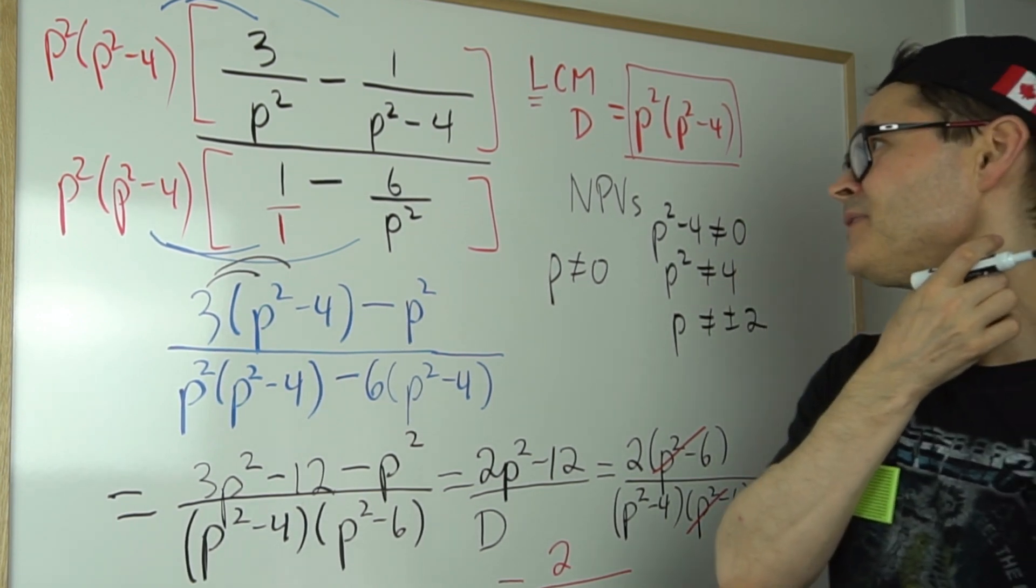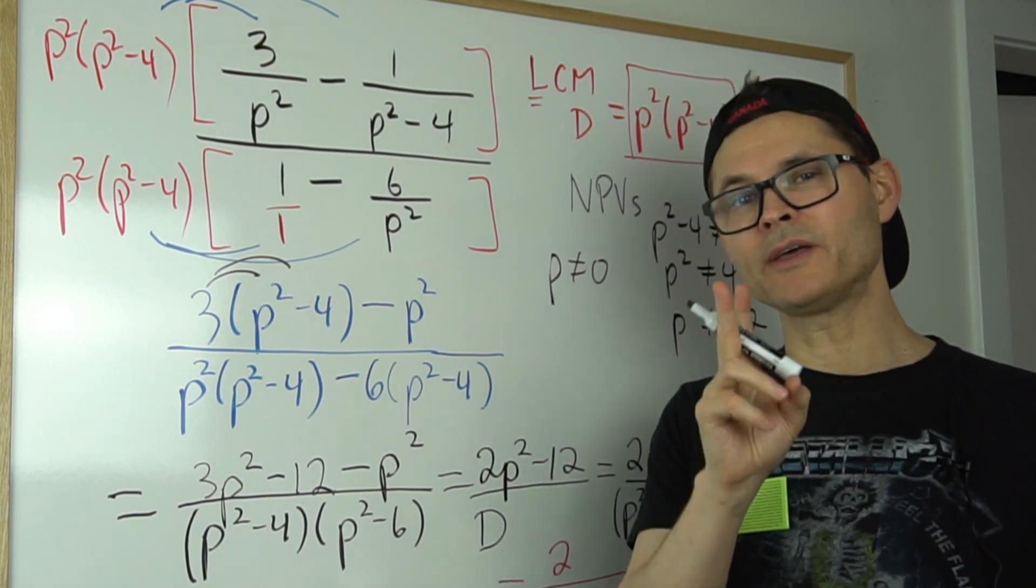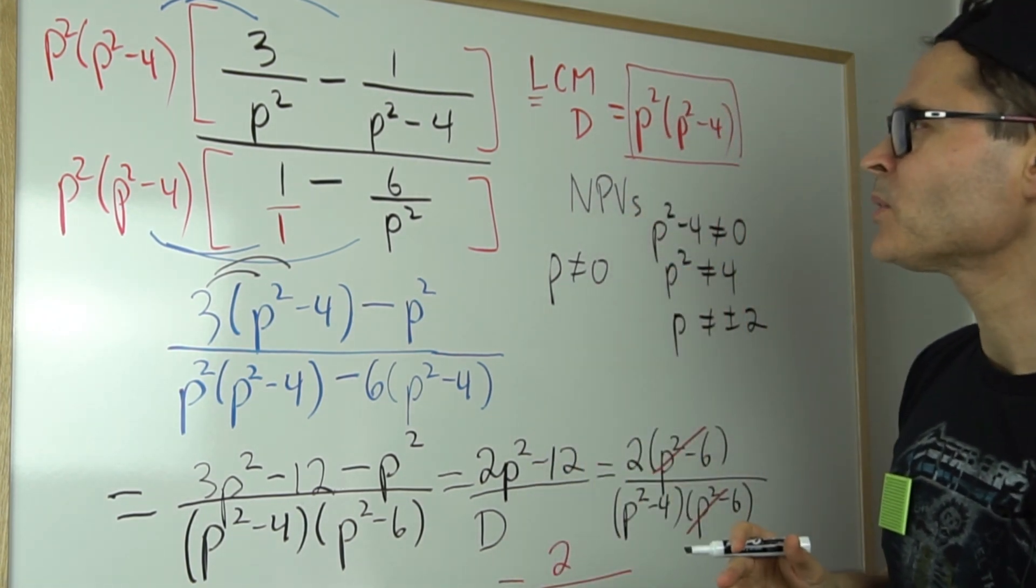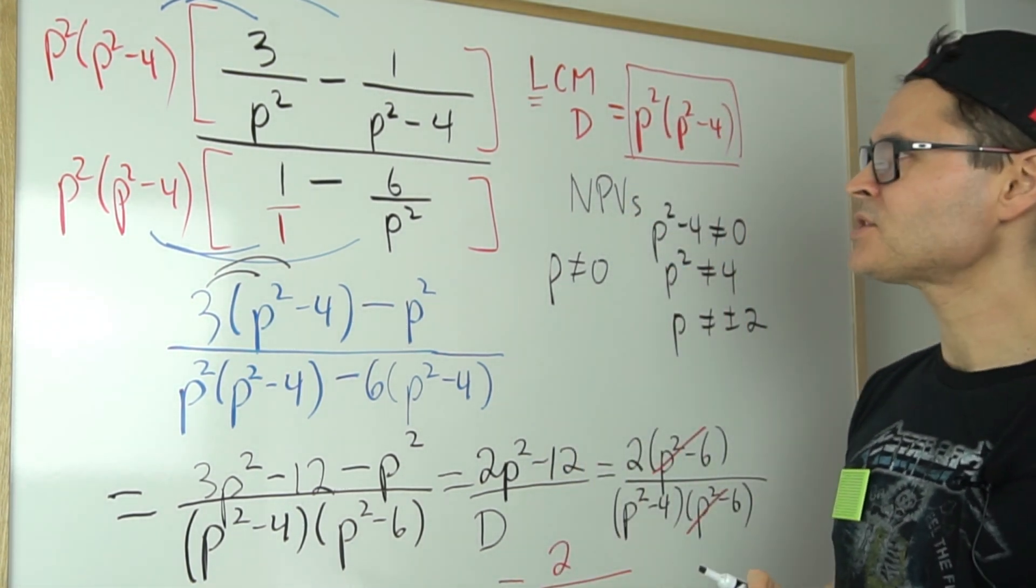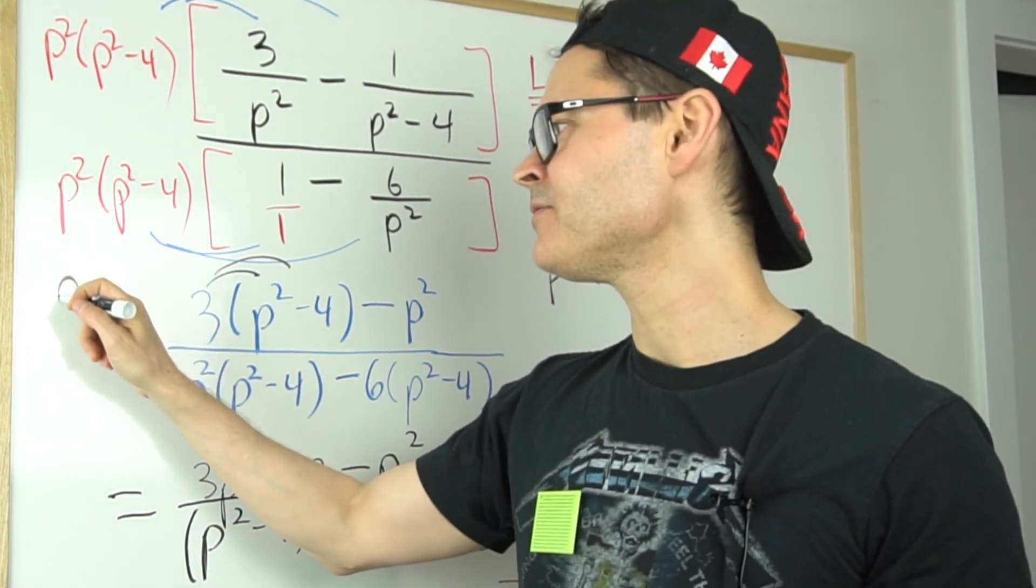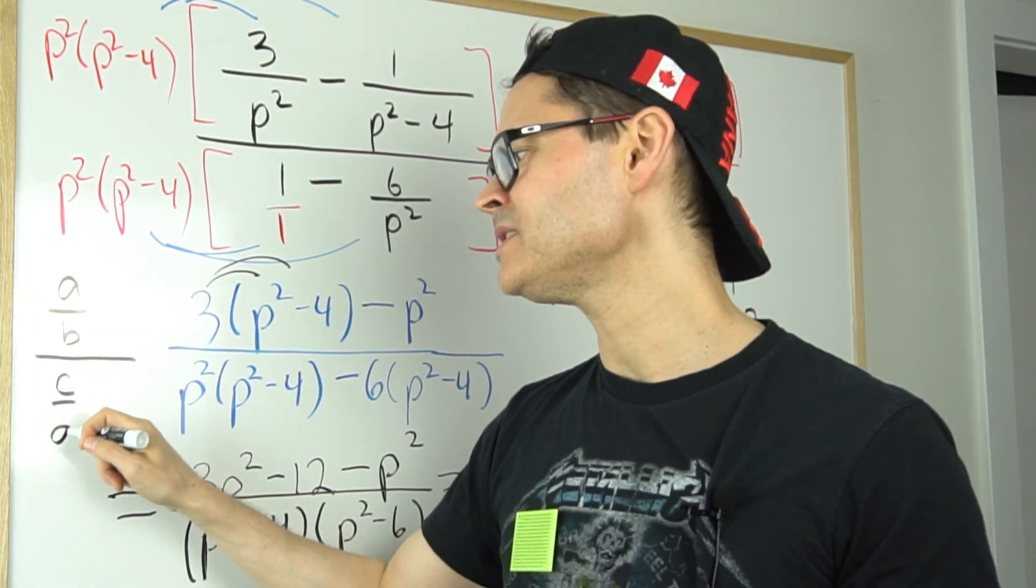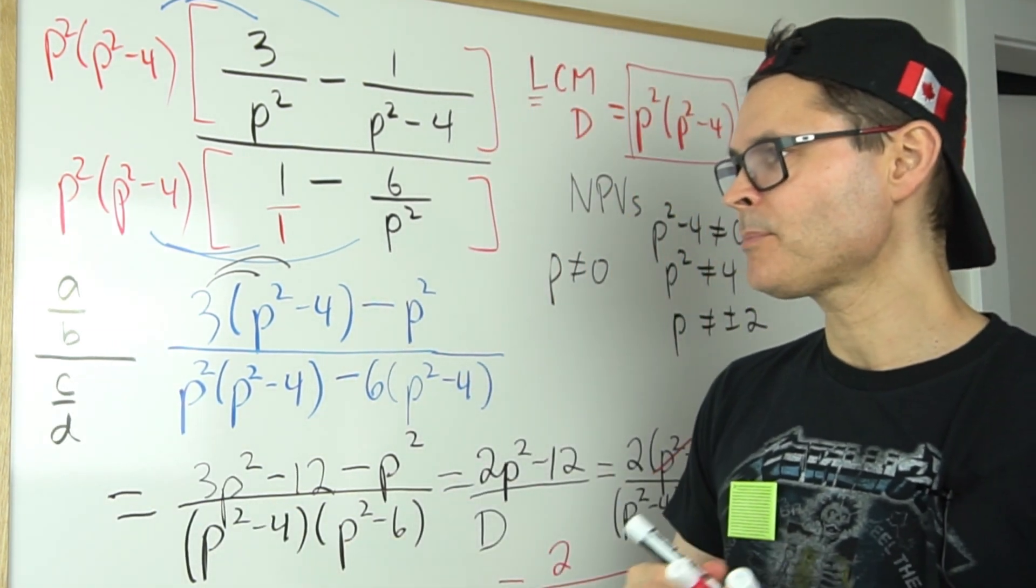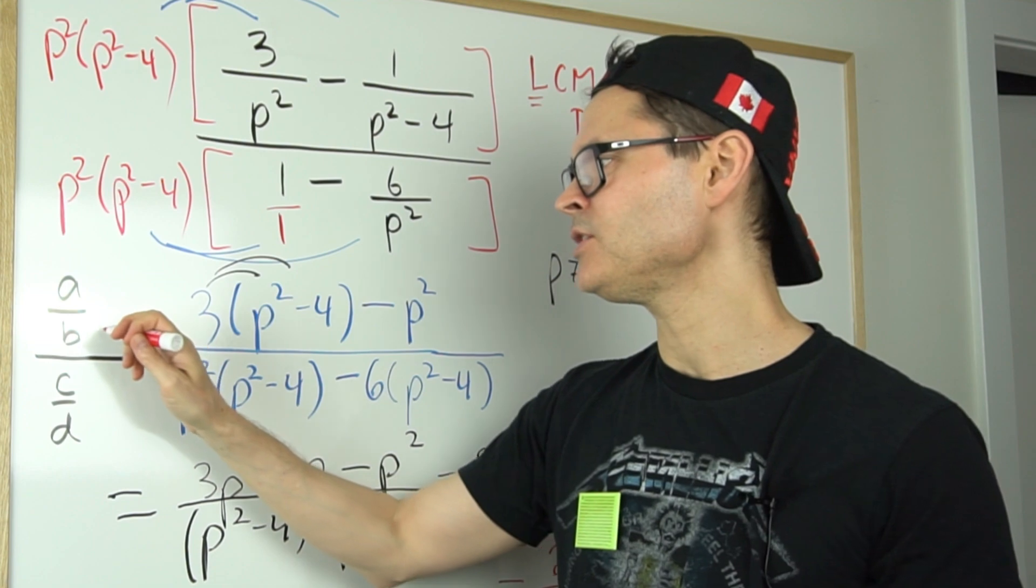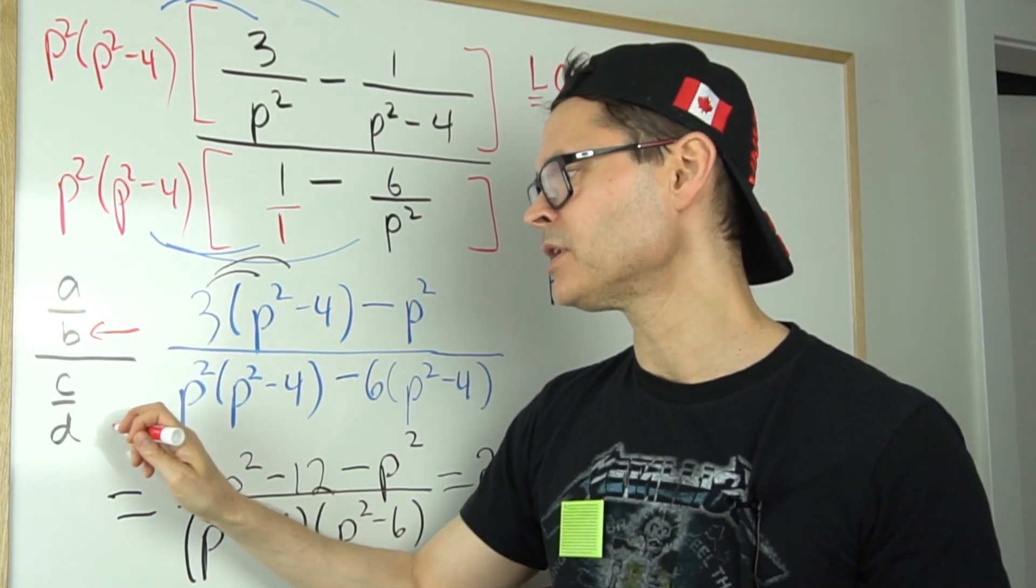Now at this stage it's easy to miss two other restrictions. But remember, when you're dividing rationals, you get restrictions. If I have a over b all over c over d, then I pick up restrictions or non-permissible values in the traditional denominators. But because c over d is also a denominator in its totality, c cannot be zero either.